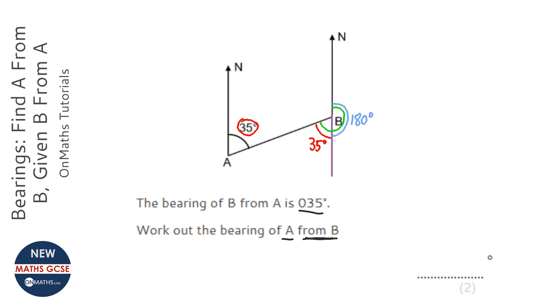So the total angle, the total bearing of A from B, is just 180 degrees, that straight line on the right, plus the 35 degrees, the angle we know is alternate to the angle on the left-hand side. And so when you add those together, you get 215. So the bearing is 215 degrees.